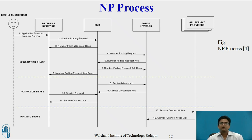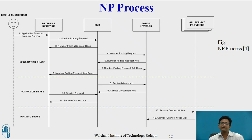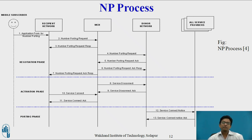In the activation phase, in step eight, service disconnect from MCH is sent to the donor network and the recipient network. Service disconnect acknowledgement is then received by MCH from the donor network. After that, service connect is received from the recipient network to MCH, and service connect acknowledgement is sent back to the recipient network from MCH. In the porting phase, the donor network sends a service connect notice to all service providers, and service connect notice acknowledgement is received by the donor network and recipient network.